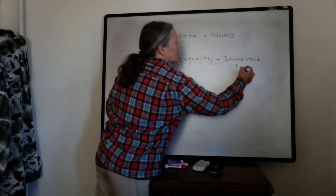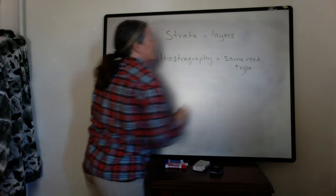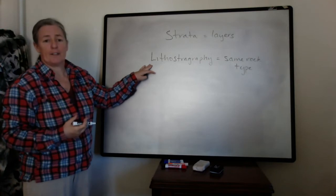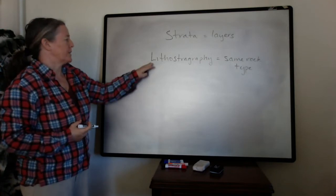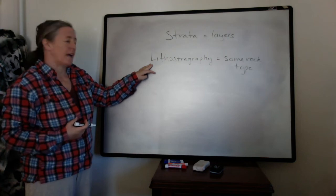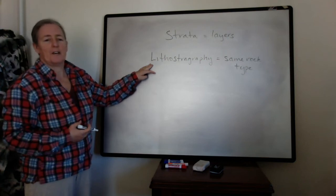This is really the easiest type of stratigraphy to do because you can actually observe the rock types directly in the field. So if I saw a red sandstone in California and I saw a red sandstone in Nevada, I could correlate them if they have the same lithology.